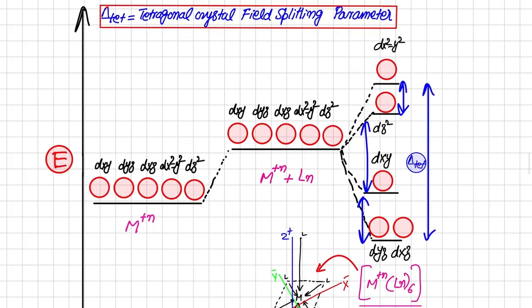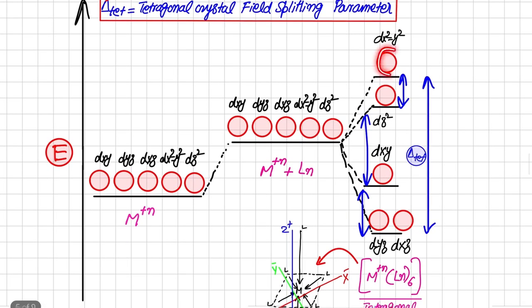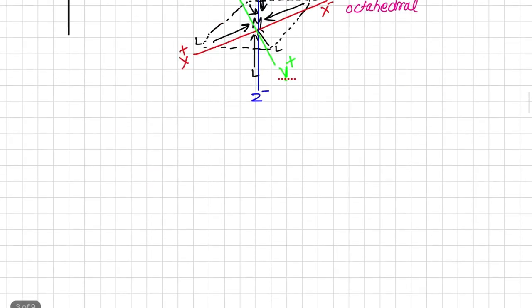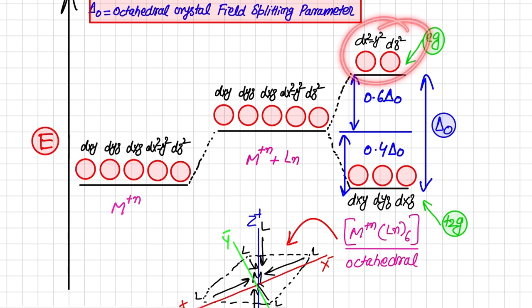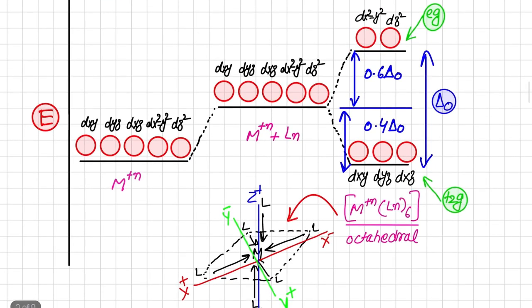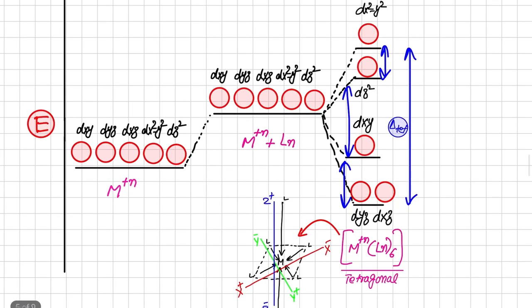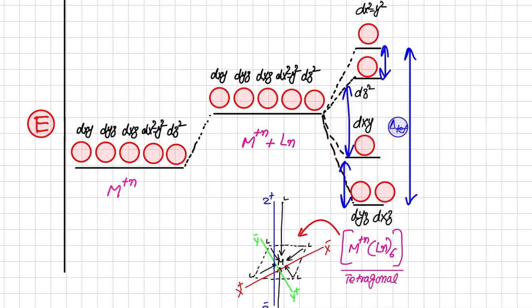In the crystal field splitting diagram for tetragonal geometry, dx²-y² is the highest in energy whereas dz² is lower than dx²-y². Remember that in octahedral geometry both these orbitals were at the same level (eg). Similarly in octahedral geometry dxy, dyz, and dxz were all at the same energy, whereas in tetragonal geometry this degeneracy is lifted. Since the ligands come nearer to the metal through the xy plane, dyz and dxz will be lower in energy.